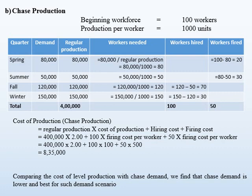We calculate the cost: regular production multiplied by production cost, plus hiring cost, plus firing cost. So we get 400,000 multiplied by $2, which is the production cost per unit, plus 100 multiplied by $100 which is the hiring cost per worker, plus 50 multiplied by $500 which is the firing cost per worker. Thus we get $835,000 as the total cost of production. Comparing the two, level production cost was $870,000 and chase production is $835,000. Hence, for this aggregate production, chase production method is more suitable.